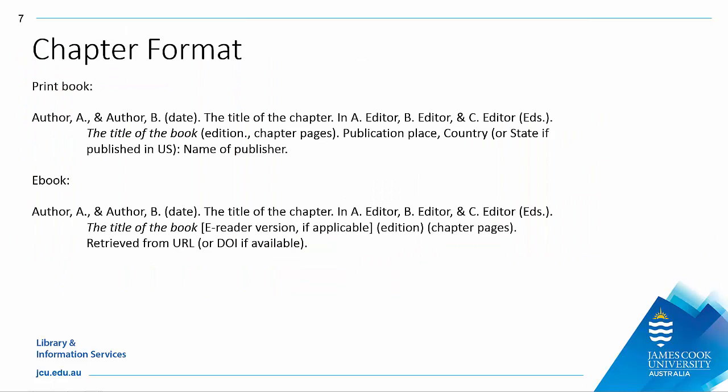Once you have all the information, put it together in the correct APA format. Similar rules apply as when referencing a whole book, with additional information required. Start with the author or authors of the chapter, the year of publication in brackets, followed by the title of the chapter. Then add the book information by writing the word IN, then the editors' names and the title of the book in sentence case and italics. Add the edition if needed and the page range of the chapter in the same set of brackets separated by a comma. Then add the place of publication and the name of the publisher. For an e-book chapter, instead of publisher details you include the format and URL or DOI.